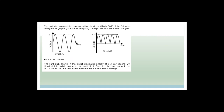Now it says the split-ring commutator is replaced by slip rings. Which voltage graph now corresponds to this change? We've changed from a direct current generator to an alternating current generator. Slip rings belong to an AC generator, so graph A is the alternating current. The split-ring commutator allows the current to swap direction within the armature, but not in the external circuit.